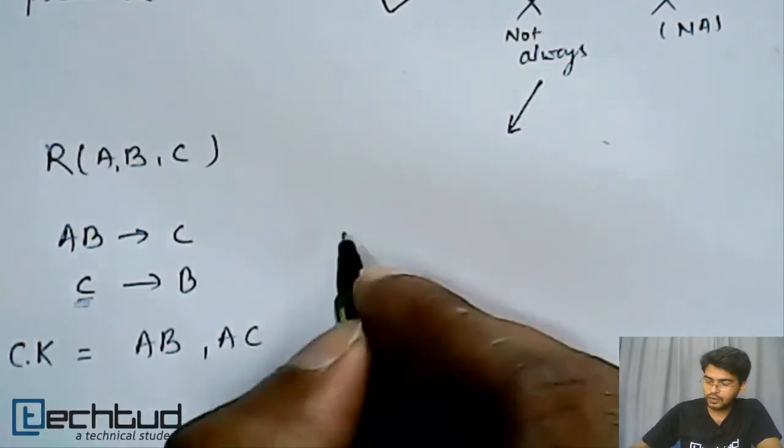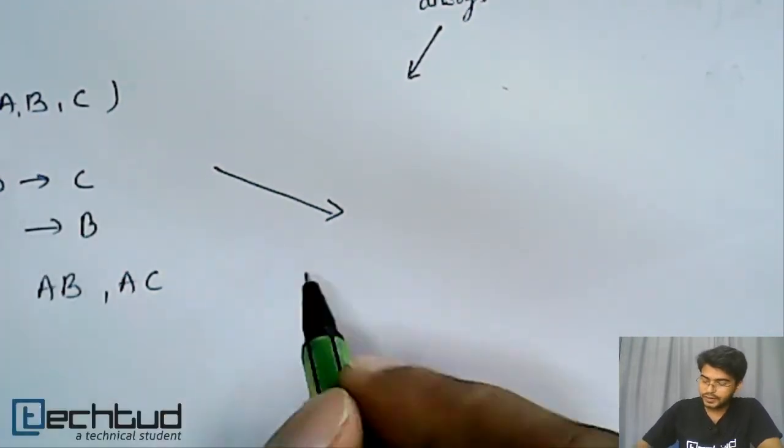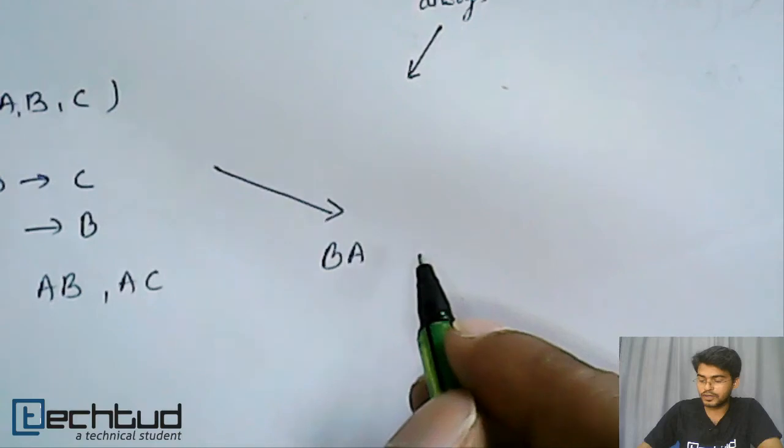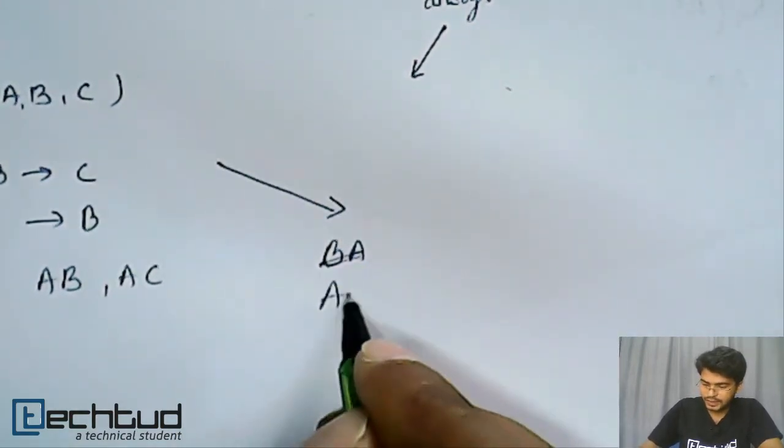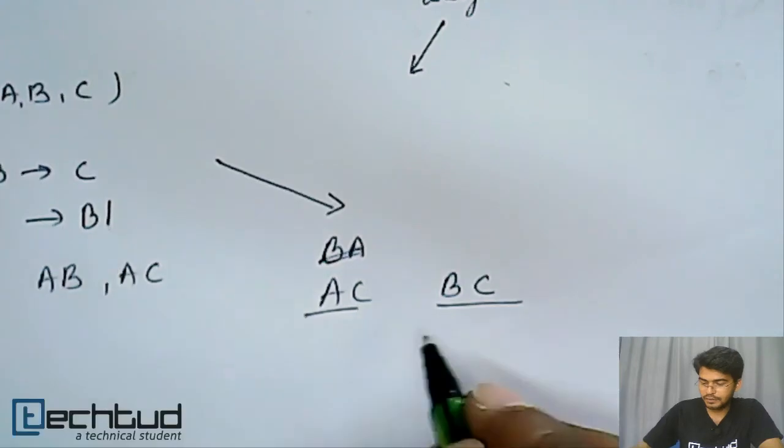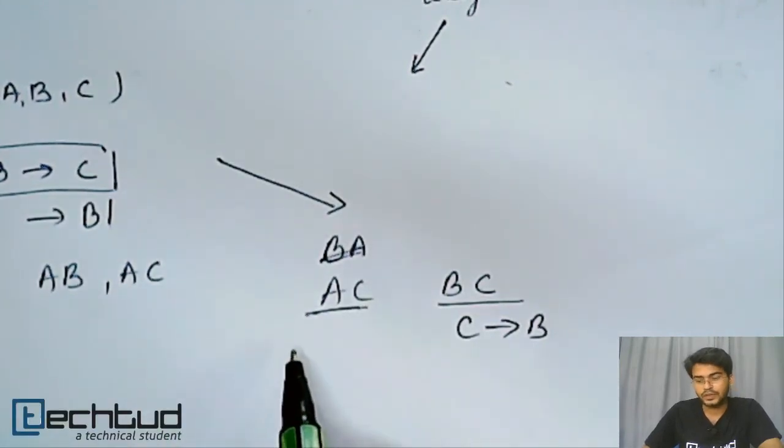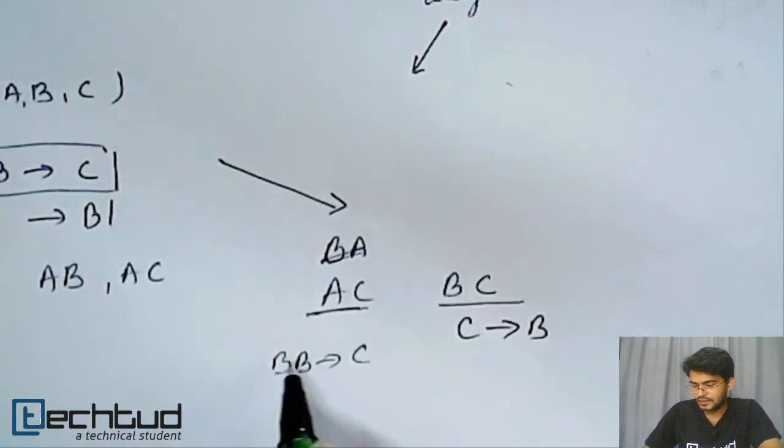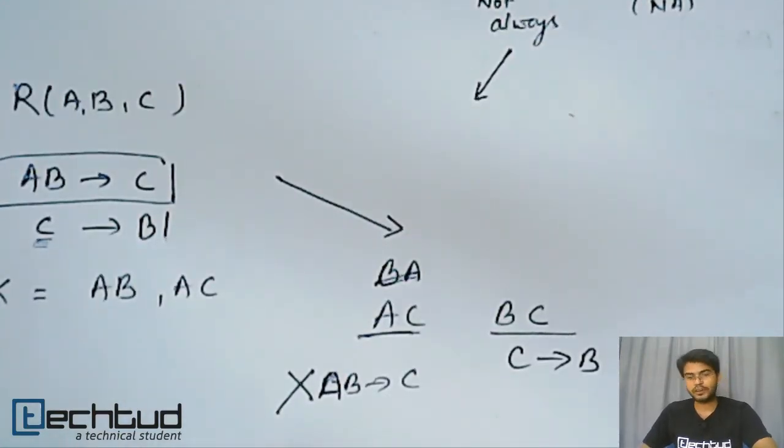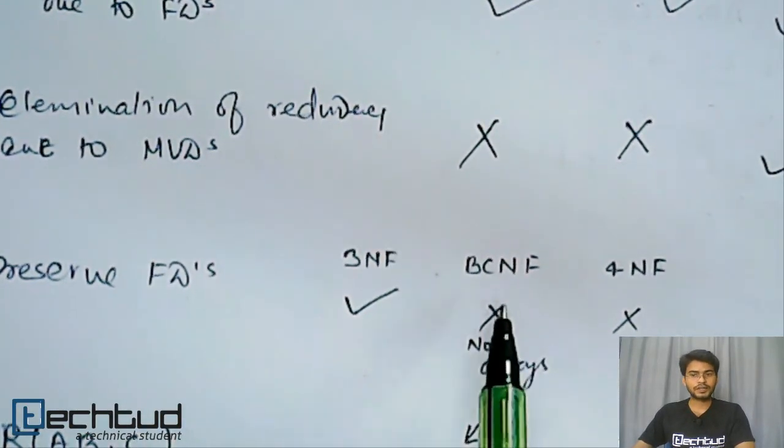Because C alone is not a key, so it is not in BCNF. Now once we go for breaking this table, we cannot break it without losing a functional dependency. In ABC you have six possibilities. Among all possibilities, let's take AC and BC. So if you break in AC and BC, this one functional dependency will be there - C determines B - but this functional dependency will be lost because in AC there is no B. So you cannot write AB determines C. Here we have to lose a functional dependency. That's why in BCNF we can lose functional dependency. It is not dependency preserving decomposition.